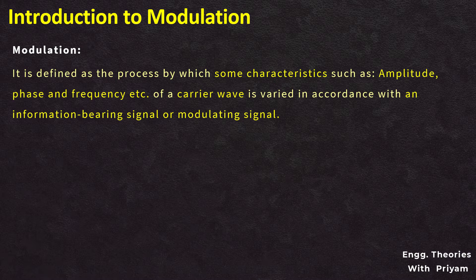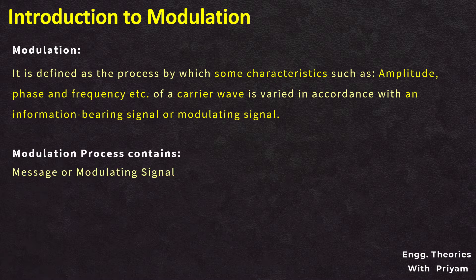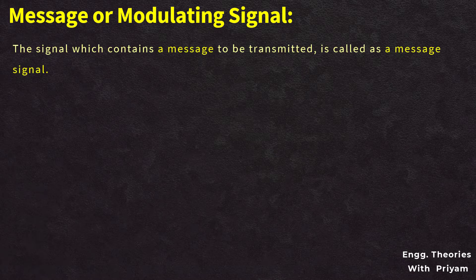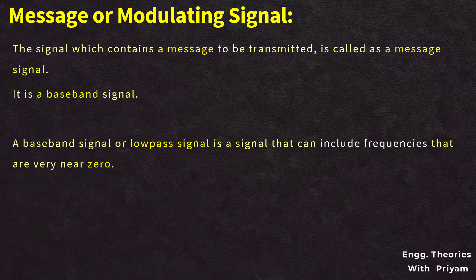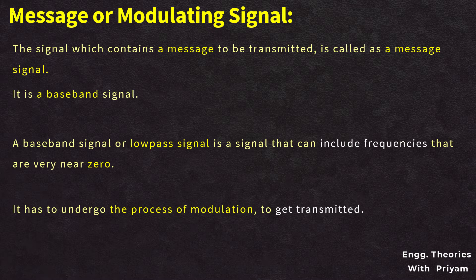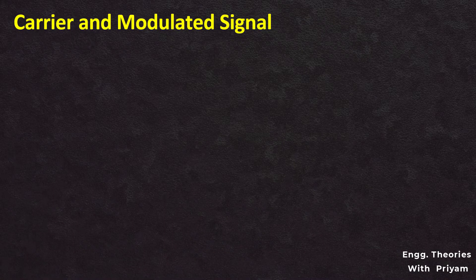The modulation process contains three components: the message signal (or modulating signal), the carrier signal, and the modulated signal. The message signal is the signal which contains information to be transmitted; it is a baseband signal. A baseband or low-pass signal is a signal that includes frequencies very close to zero. It must undergo modulation to be transmitted, hence it is also called the modulating signal.